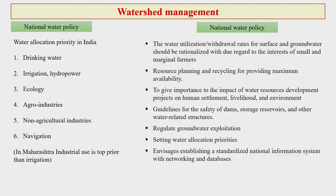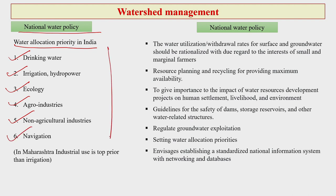We are discussing different water policy issues. Following this, we come to another larger perspective: the national water policy. The water allocation priority in India is largely focused on drinking water, irrigation, hydropower, ecology, agro industries, non-agriculture industries, and navigation. These are the areas on which the national water policy looked at very closely for water allocation in India.